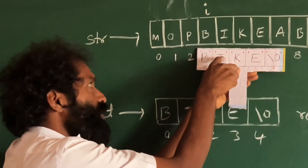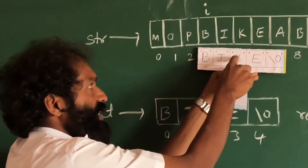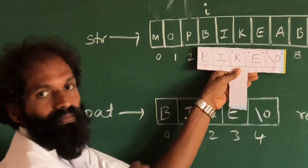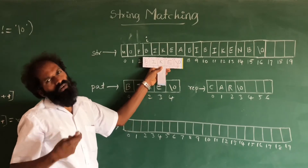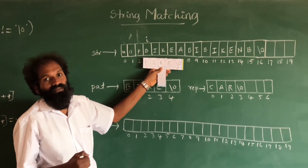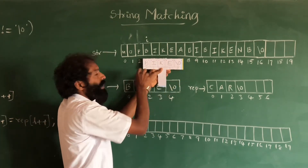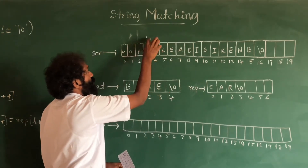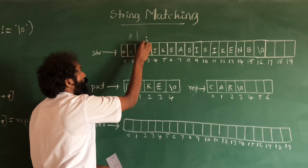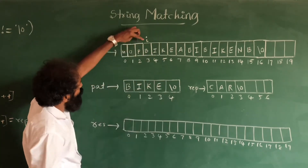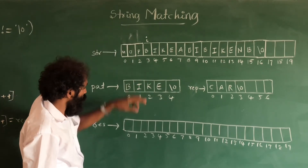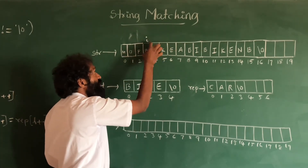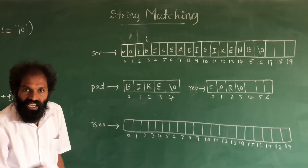We keep checking: if both are same, check next; both are same, check next; both are same. When we increment and get a null character in the pattern, it means the string is found. When we get null character in the pattern, the pattern search is over — the string is found. Now the work is: before the current position of i, whatever characters are there, we need to copy them.